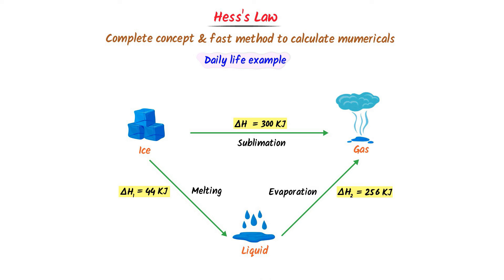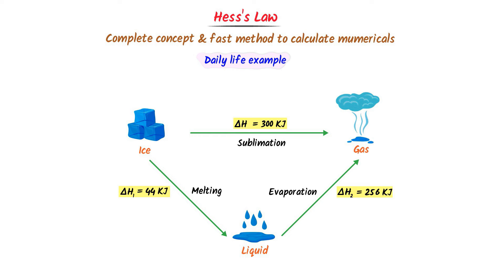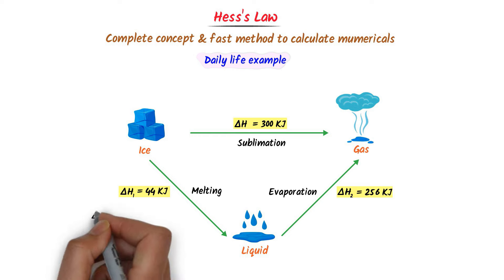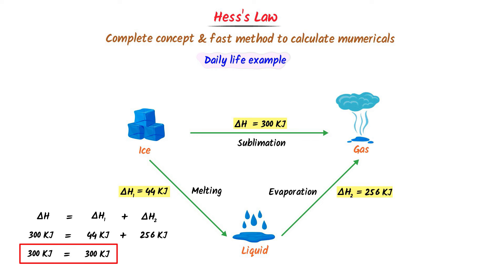Now listen carefully. Ice needs ΔH = 300 kilojoule energy to convert to gas directly. If we add ΔH₁ plus ΔH₂, it will be equal to ΔH. We know that ΔH = 300 kilojoule, while ΔH₁ = 44 kilojoule and ΔH₂ = 256 kilojoule. I get 300 kilojoule is equal to 300 kilojoule. Left-hand side is equal to right-hand side.